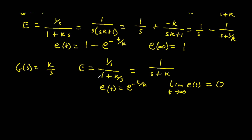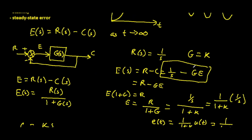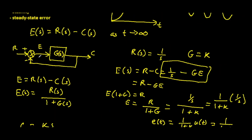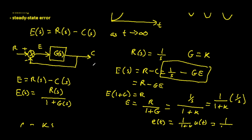We can always find the steady-state error for any system. If it's in the unity feedback form, we can simply find our steady-state error using E of S equals R of S over 1 plus G of S. That's the whole story about steady-state errors for the unity feedback case.